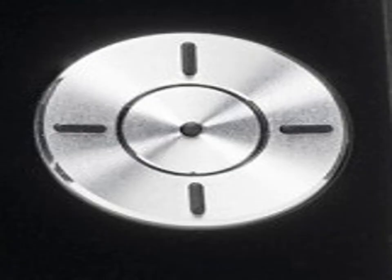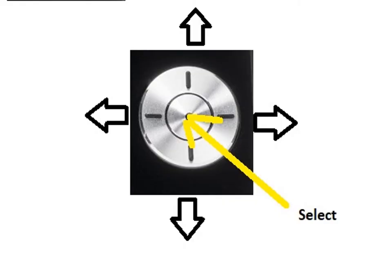Let's talk about the navigation key itself. It's a silver round key, and you'll notice there's a little circle inside of it. The outside ring will allow you to scroll left, right, up, or down, and then the very center is a select key. For example, if you're going into your call history and you scroll over to a phone number you want to redial, you can hit the select key once you've highlighted it and it will dial the phone number.